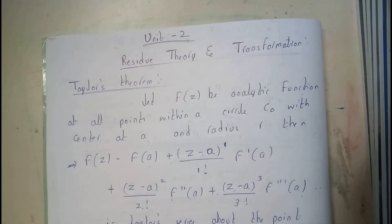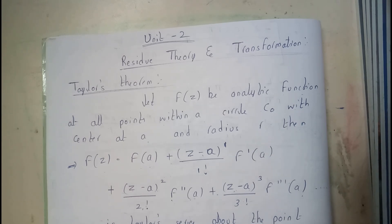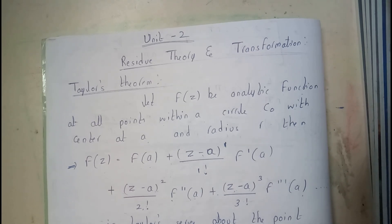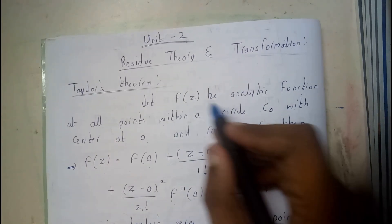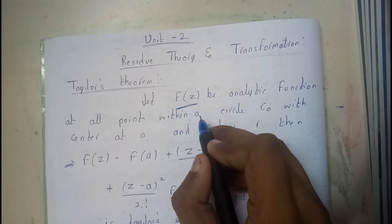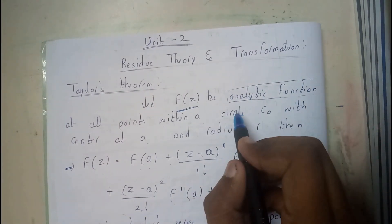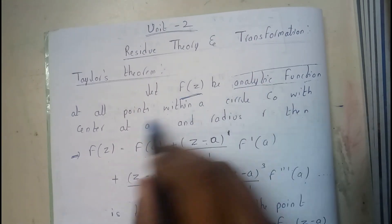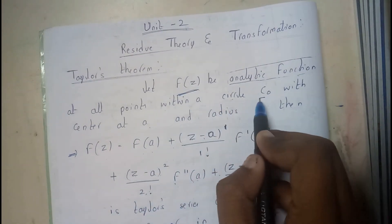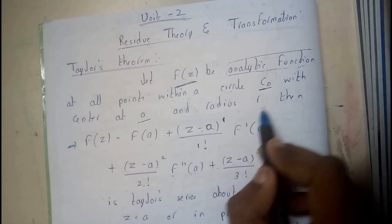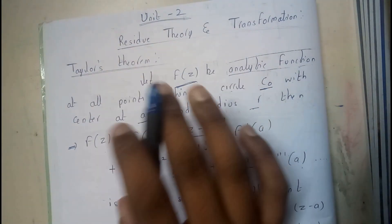Our first concept in this chapter is Taylor's series expansion — one of the most important and easiest topics. I hope everyone covered this topic previously in semester 1 and 2. So basically, let f(z) be an analytic function — as we discussed in chapter 1 of M3 — at all points within a circle C₀ with center a and radius r.